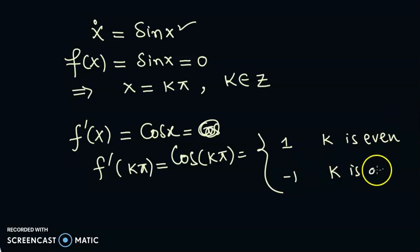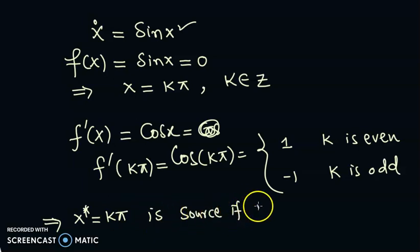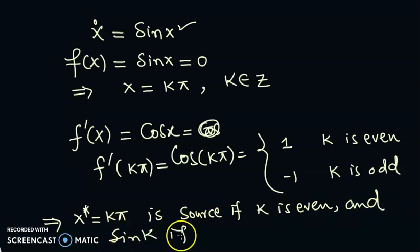So what does it tell? It is telling that x star equal to k pi is source if k is even, and sink if k is odd, because for k even the derivative at this point is positive, and for k odd the derivative at this point is negative.